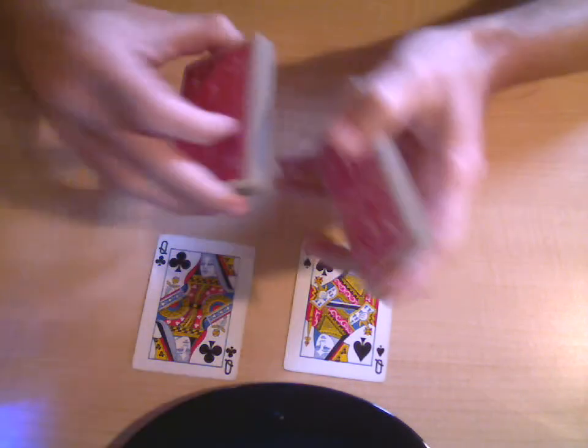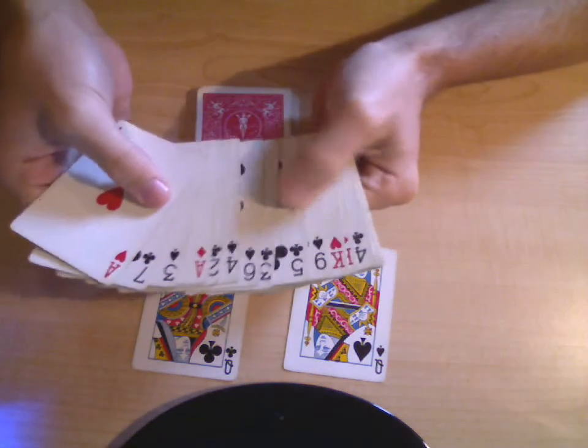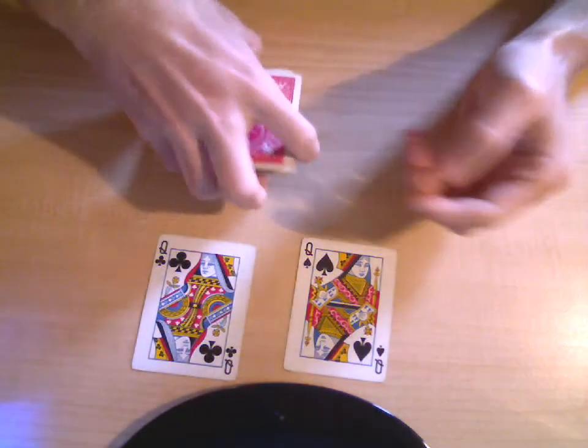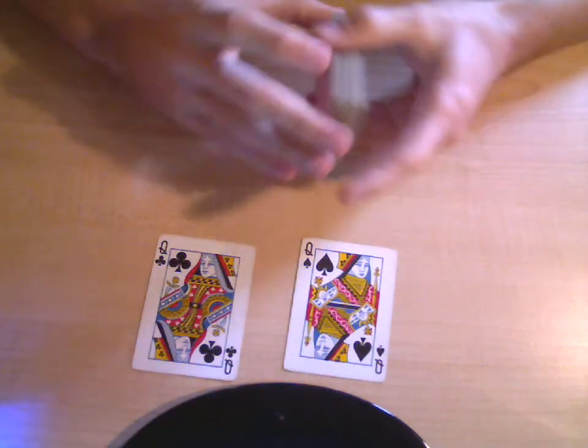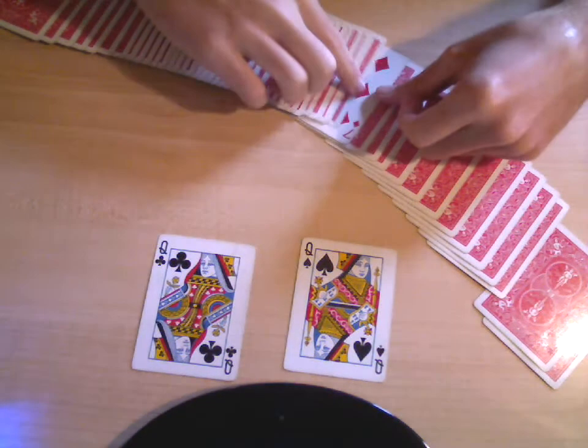And you can take half the cards or whatever, put them down and say okay you might think it's near the bottom. Fan through, show that it's nowhere near the bottom. And then you just put this back on top. And then say okay well then where could my card be. And then just slide it out. And then it's right there in the middle face up.